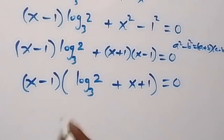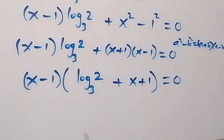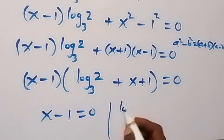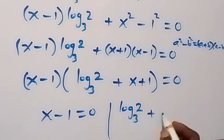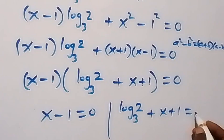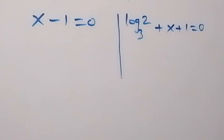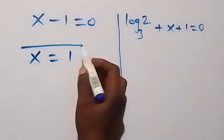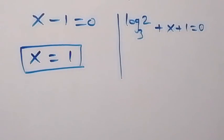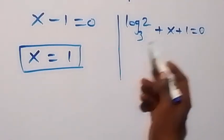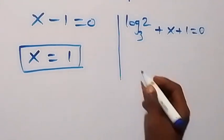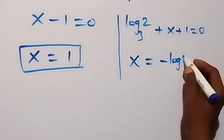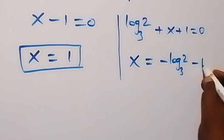From here the two cases we have will be: x minus 1 equals 0, or log₂ base 3 plus x plus 1 equals 0. From the first case, x equals 1. From the second case, taking log₂ base 3 and 1 to the other side gives x equals minus log₂ base 3 minus 1.